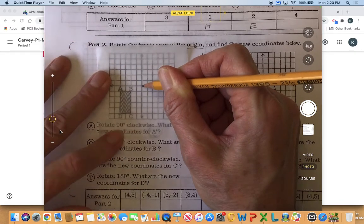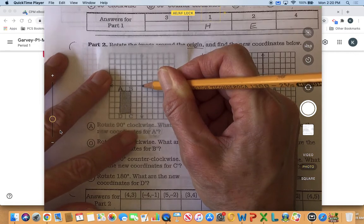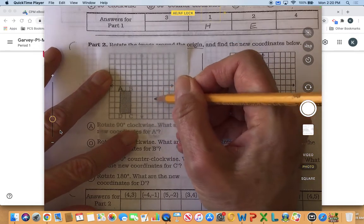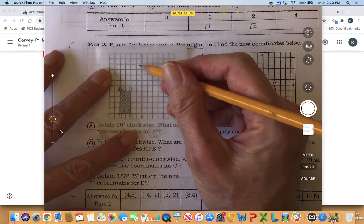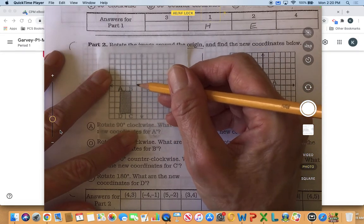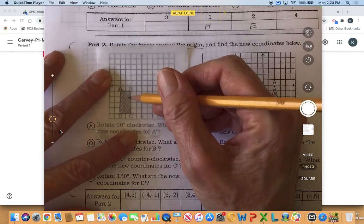And then I'm going to rotate 90 degrees clockwise. Clockwise is this direction, of course, and we're only going to go 90 degrees, so only a quarter turn, so this will probably end up right here in the next quadrant.